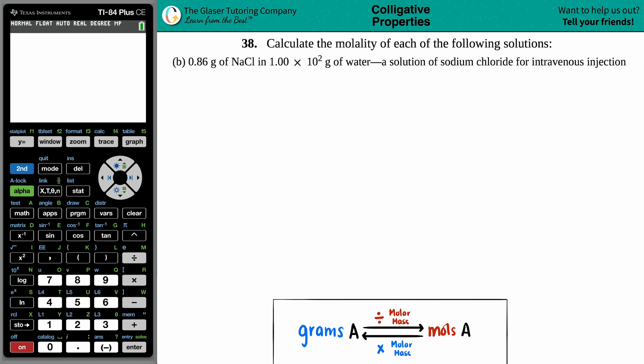Number 38, calculate the molality of each of the following solutions. And then we have letter B. So in this case, we have 0.86 grams of NaCl, which is in 1.00 times 10 to the second grams of water.